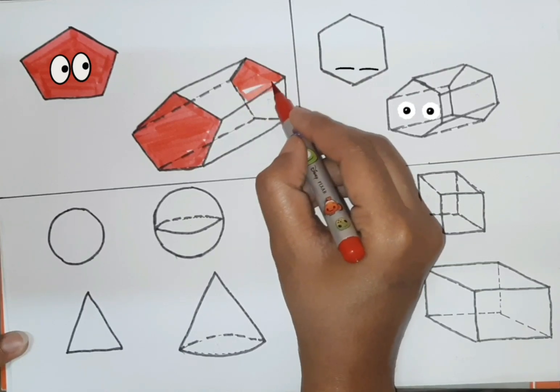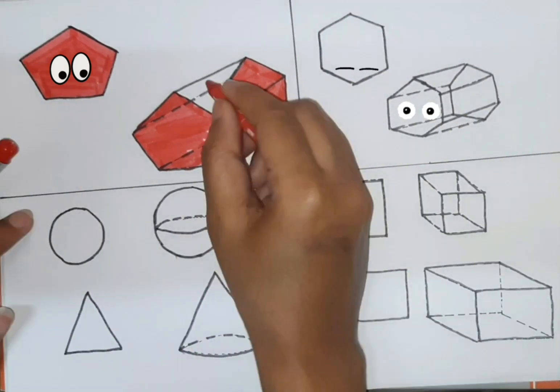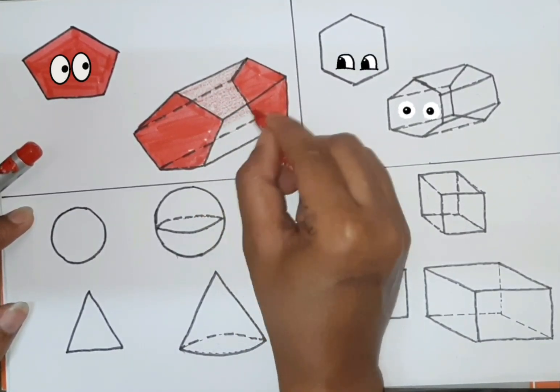Let's darken the back side also. And in middle, we lighten the color. Red color.